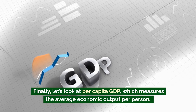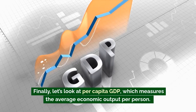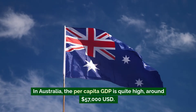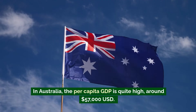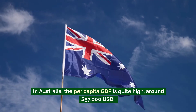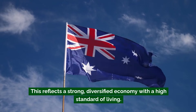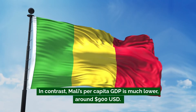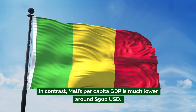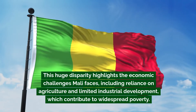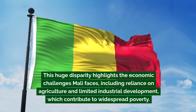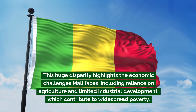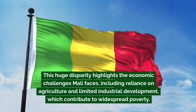Finally, let's look at per capita GDP, which measures the average economic output per person. In Australia, the per capita GDP is quite high, around US$57,000, reflecting a strong, diversified economy with a high standard of living. In contrast, Mali's per capita GDP is much lower, around US$900. This huge disparity highlights the economic challenges Mali faces, including reliance on agriculture and limited industrial development, which contribute to widespread poverty.